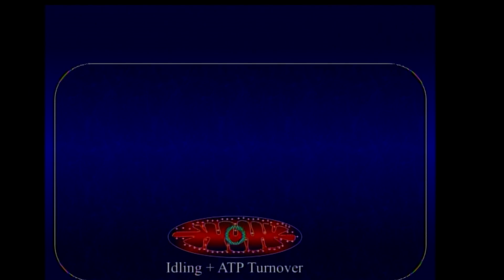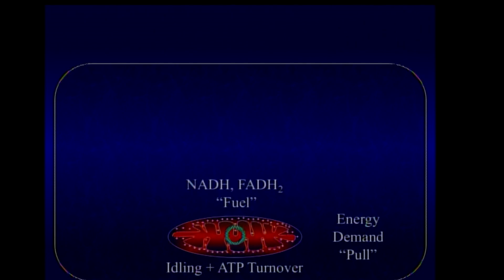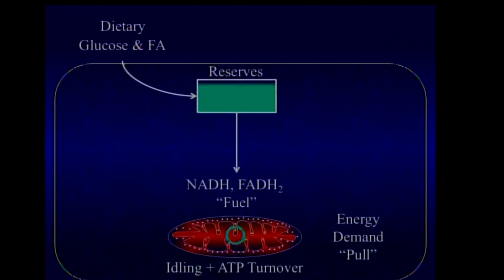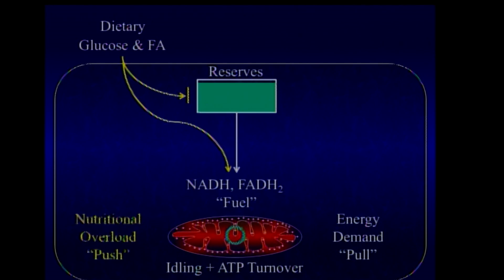Mitochondria are always idling or consuming energy. In between meals, we tap into fuel reserves, and then we eat to replenish those reserves. The problem is that we're now in a society where people are eating when the reserves are already replete, and it puts a nutritional overload on the system. The result is that too much H2O2 is being released, and it signals to the cell to decrease insulin sensitivity.